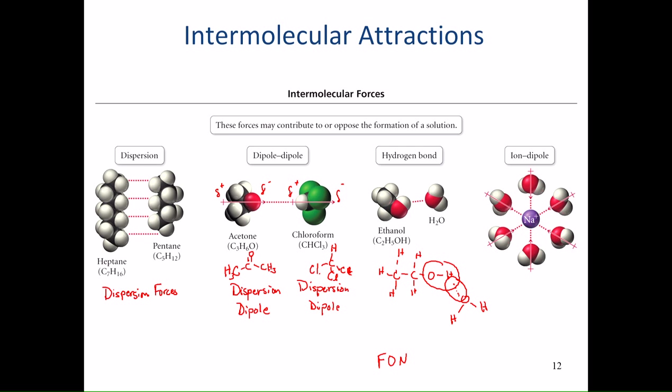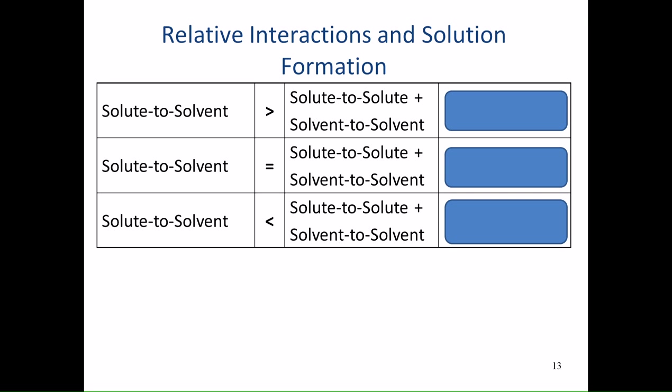The strongest intermolecular force is the ion-dipole interaction, where an ion — for example a sodium cation — interacts with a dipole, such as a polar water molecule. The water molecule has a partial positive and partial negative end, and the negative end is attracted to the sodium cation. All surrounding water molecules orient with their negative ends pointed toward the sodium cation due to this very strong ion-dipole interaction. Whenever we look at solubility, we analyze what type of intermolecular forces are present and which is strongest.